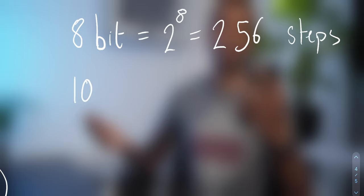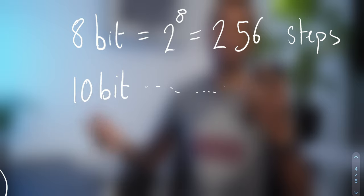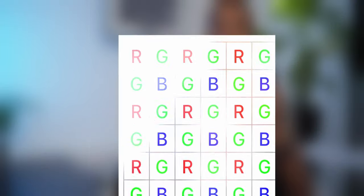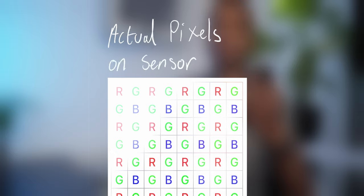Bit depth is expressed as 2 to the power of something. If it's 2 to the power of 12, then we have 12-bit, which means 4096 steps between 0 and 100%. Most modern sensors capture between 12 and 16 bit. Now, the pixel array on its own only detects brightness of light, not colour. For colour, the Bayer filter goes on top of the pixel array and filters white light down to red, green, and blue. The Bayer filter is used on most sensors in modern cameras and allows us to get the full colour spectrum.